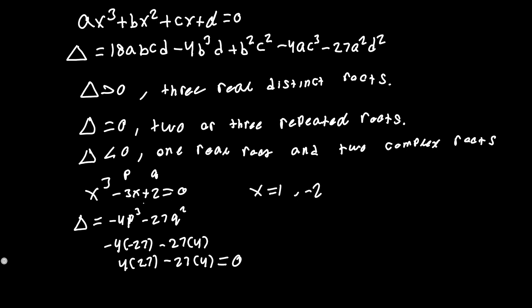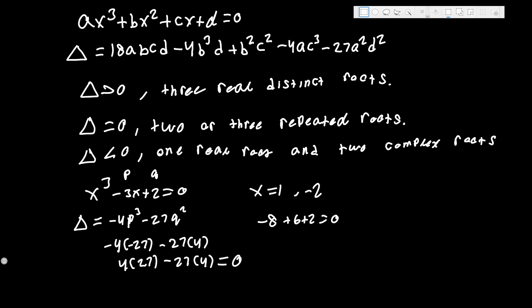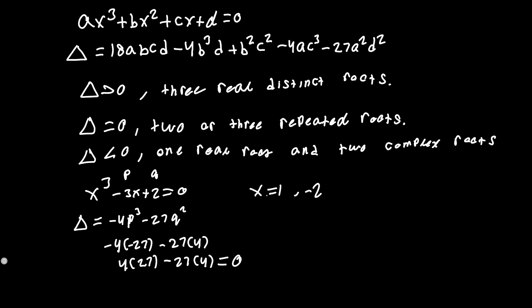We can verify by plugging in 1: 1 - 3 + 2 = 0. And for x = -2: -8 + 6 + 2 = 0. So the cubic factors as (x - 1)²(x + 2).